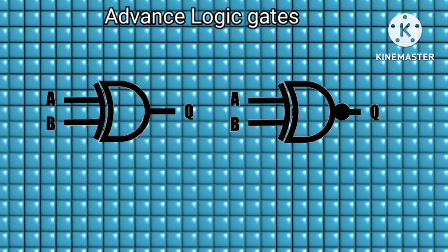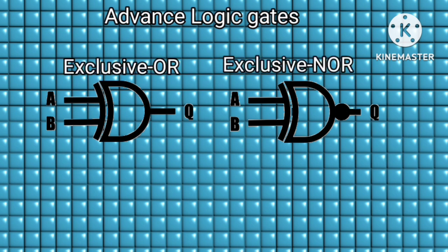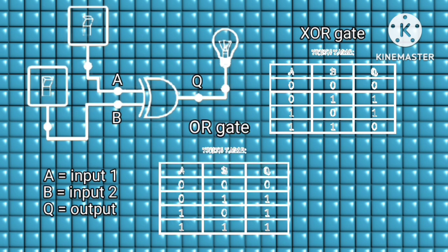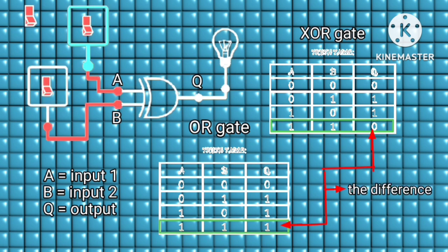The next two logic gates are the advanced type: the exclusive OR gate and the exclusive NOR gate. For the exclusive OR, also known in short as XOR, it only changes the result of both inputs in an OR gate when both inputs go high. Instead of a high output as in the OR gate, we have a low output.